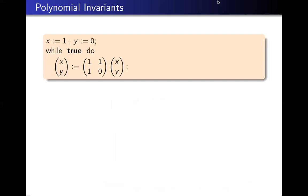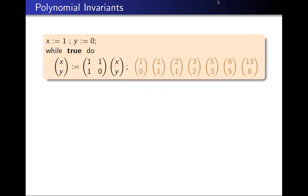In this talk, we're going to be interested primarily in polynomial invariants. To be concrete, here's a simple programme with two variables. The body of the programme is just a loop that continuously executes, and in the loop body the variables are updated by a linear update represented by matrix multiplication. If I print out the first few values of the variables as the loop unfolds, you can see that this programme is computing the Fibonacci sequence. The question we want to ask is: are there any non-trivial polynomial invariants for this programme?